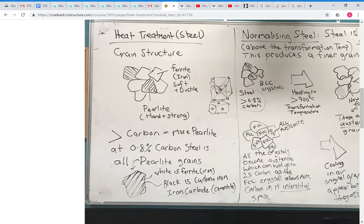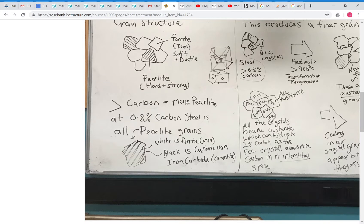And you've got these particles here called perlite. Perlite is hard and strong, so the more perlite you have in the steel the harder the steel will be. The amount of perlite is dependent on the amount of carbon in the steel — so carbon is the main thing that makes steel hard.